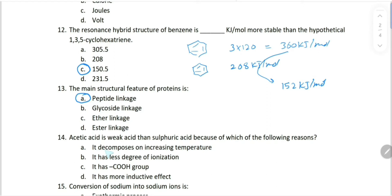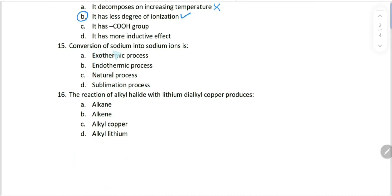Acetic acid is weak acid compared to sulfuric acid because of which of the following reasons? It decomposes on increasing temperature - no, that has no relation with acidity. It has less degree of ionization - yes, this is related to acidity. It has COH group - no. It has more inductive effect - no. So choice B is related to acidity.